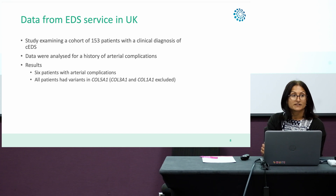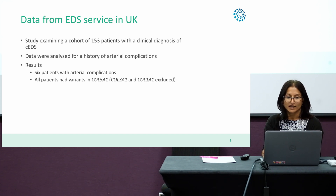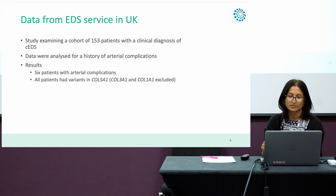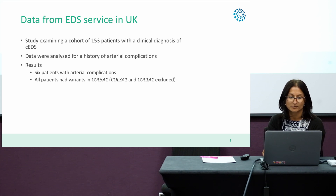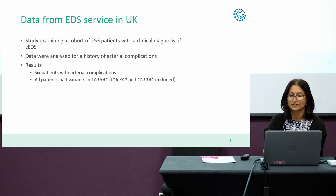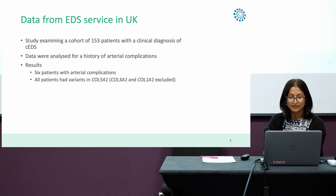We've looked at the data from the EDS service in the UK. We've examined a cohort of 153 patients with a clinical diagnosis of classical EDS, looking specifically for a history of arterial complications. The results have shown that six out of 153 patients have had arterial complications. Again, all these patients had variants in Col5A1, none in Col5A2, and they've all had Col3A1 and Col1A1 excluded.